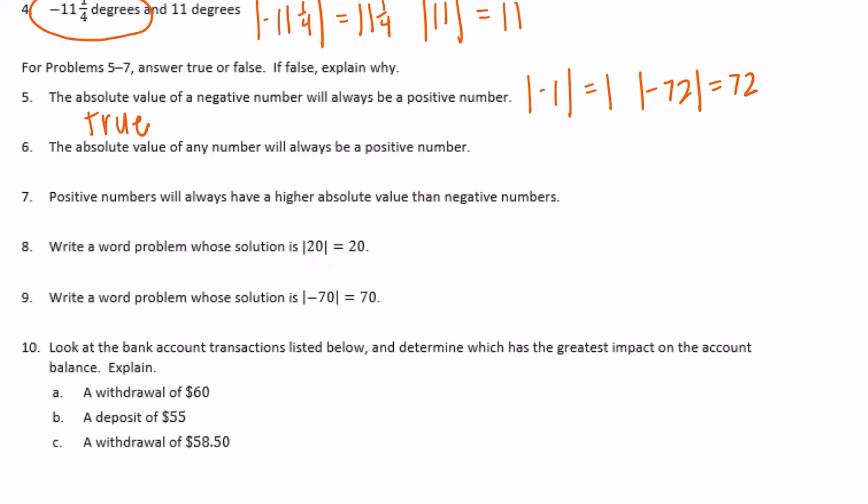Number 6: The absolute value of any number will always be a positive number. So absolute value of any number is always positive. Well, this is true in almost every single case except for 0, because the absolute value of 0 is equal to 0 and 0 is not a positive number. It's not negative either. It's in its own category.